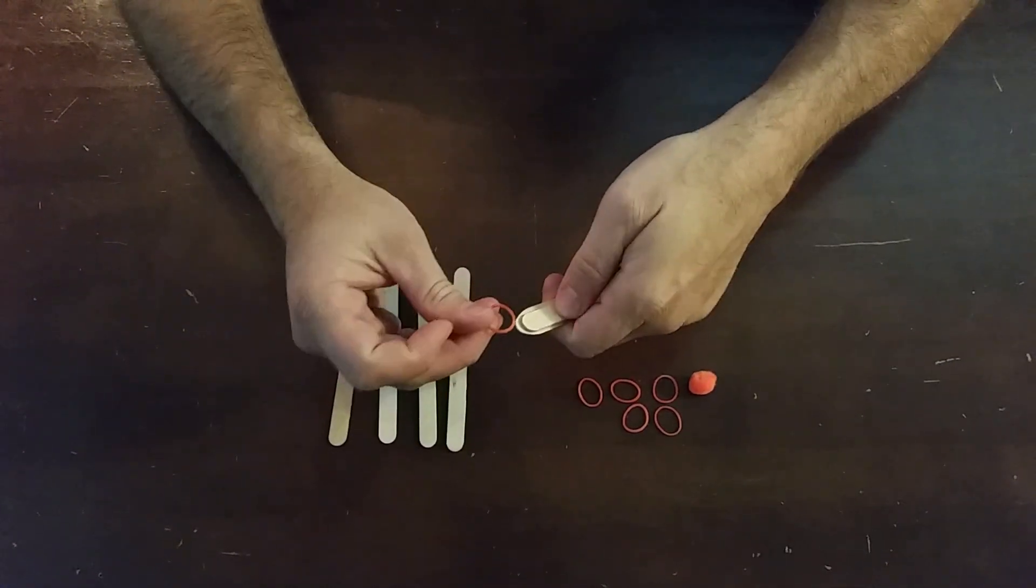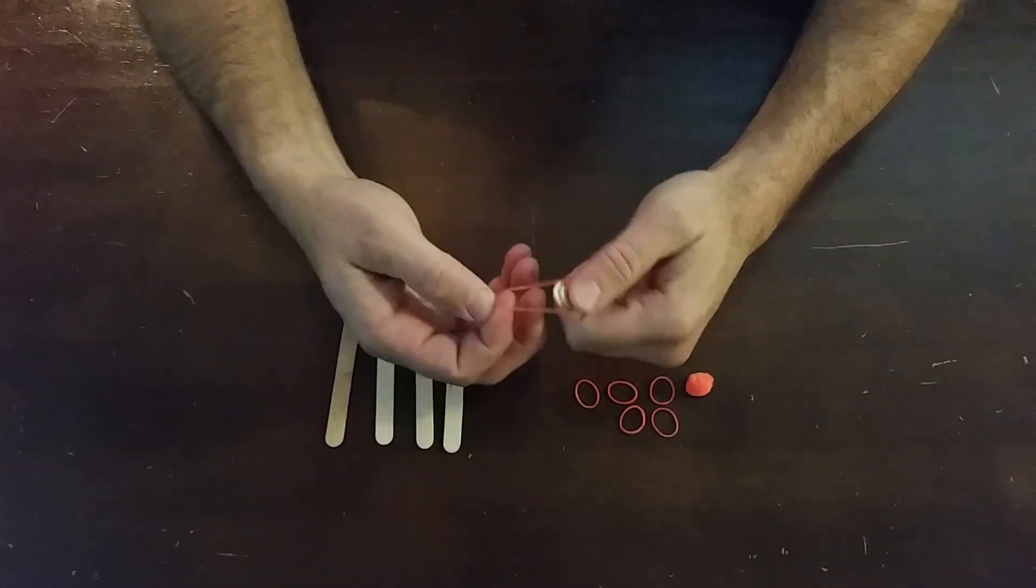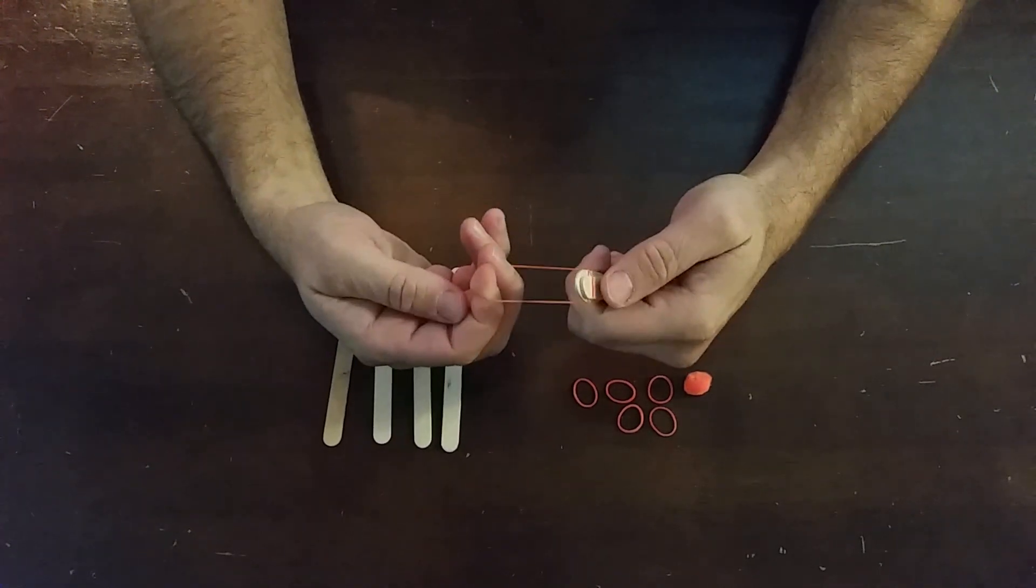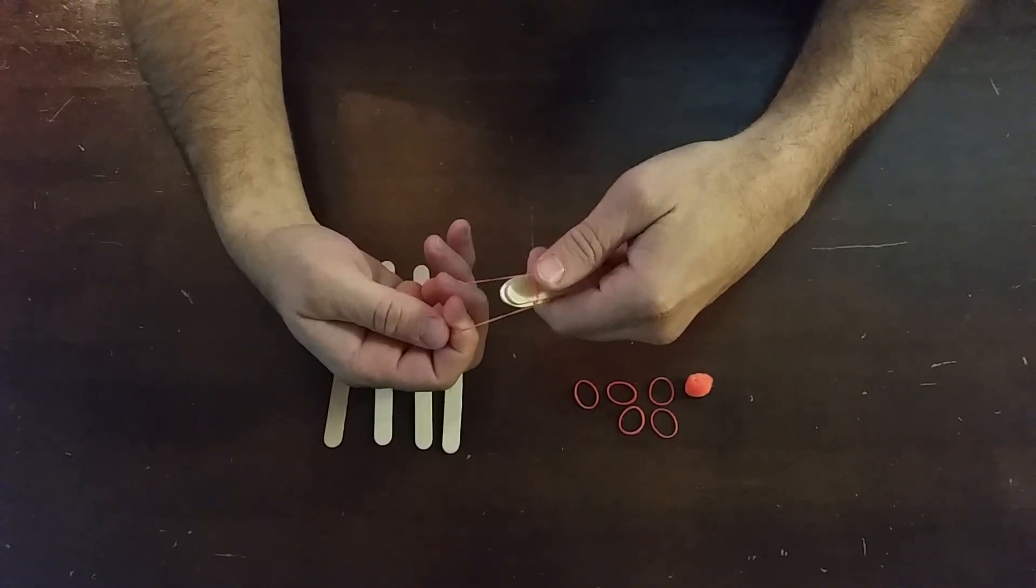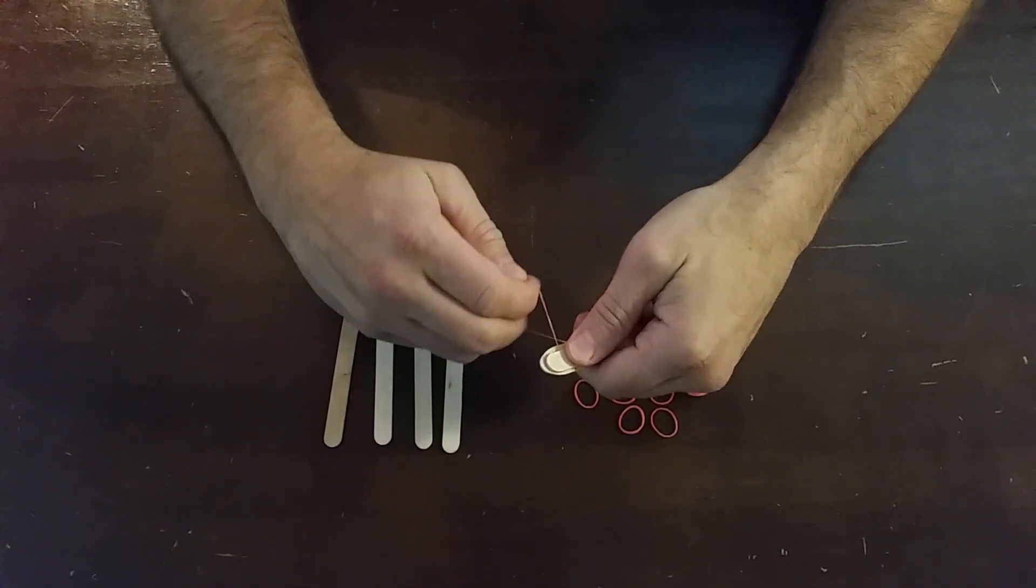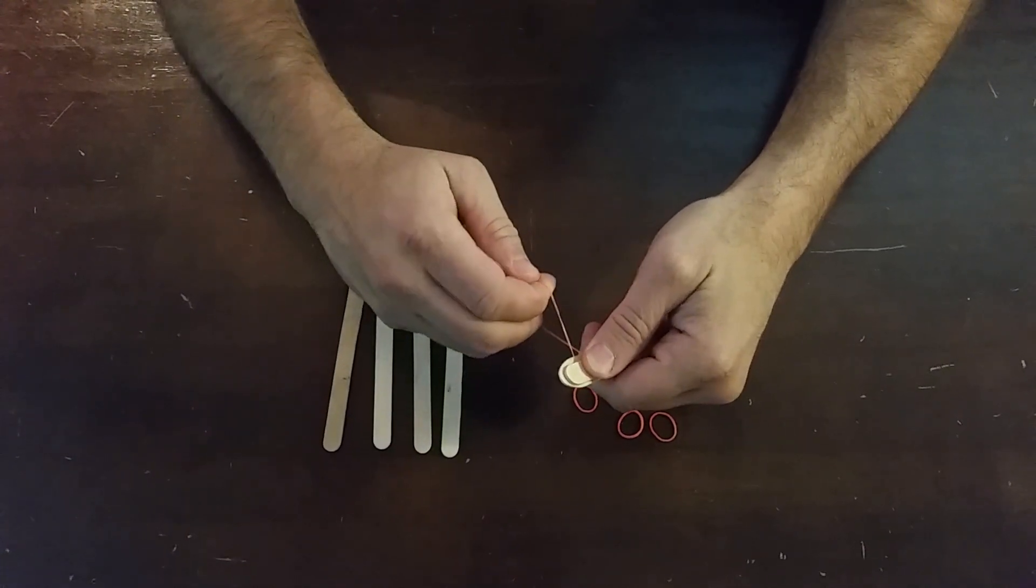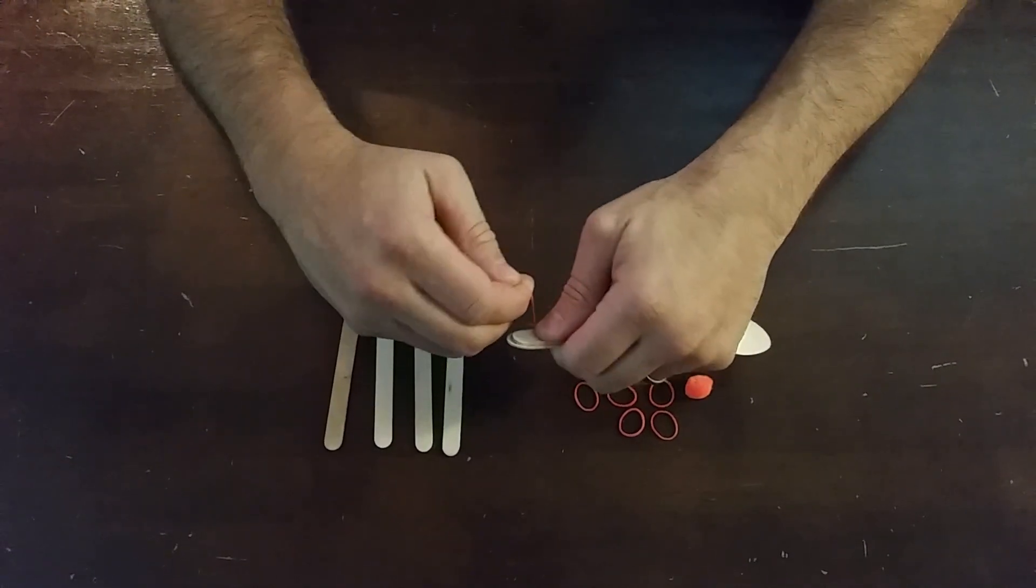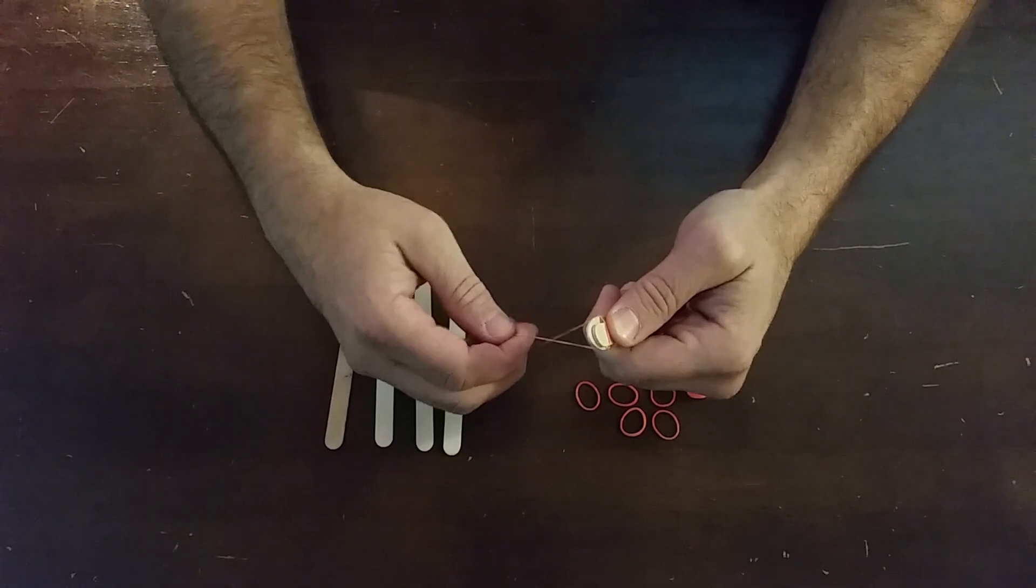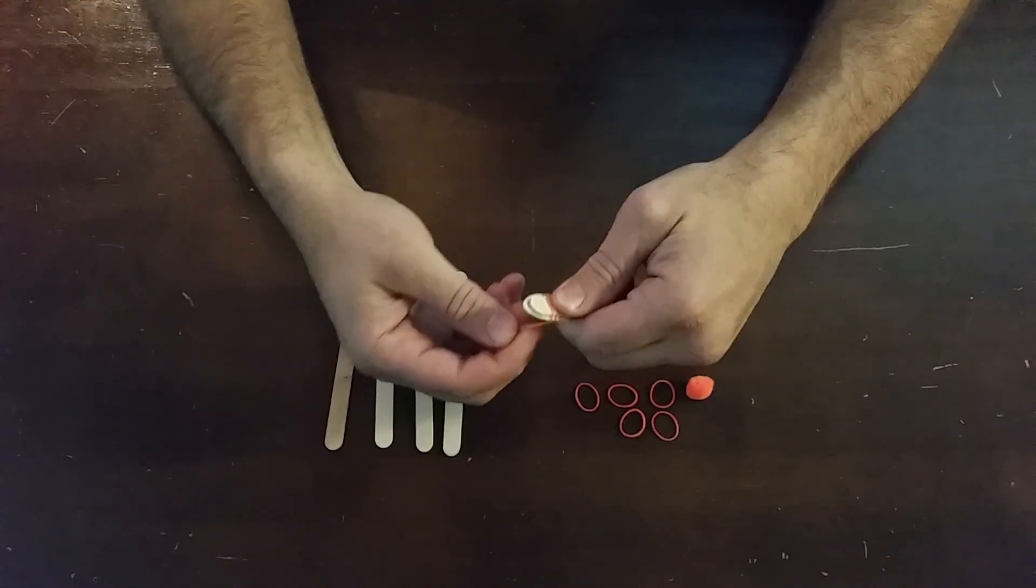Then you're going to take one of the rubber bands and pull it out with two fingers here. I like to hold it with my thumb here, and then as I'm wrapping it around, I turn a little bit like this and wrap one of the edges around once and twice.